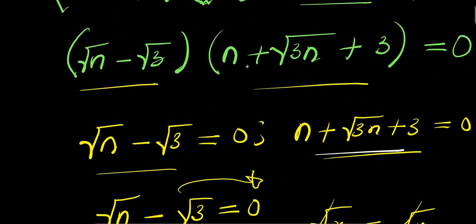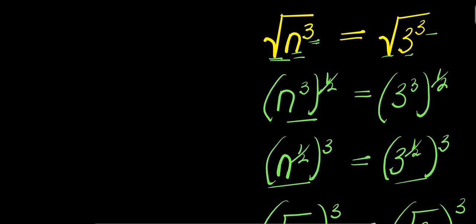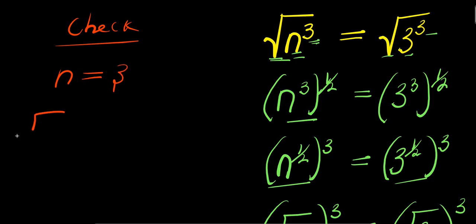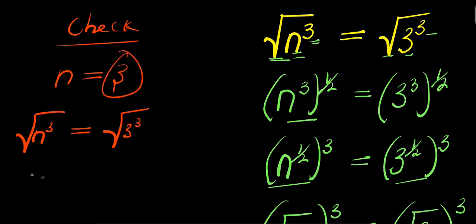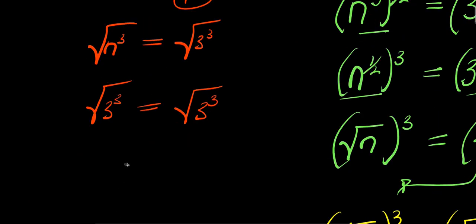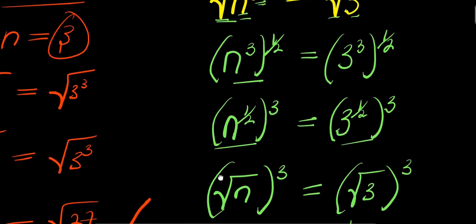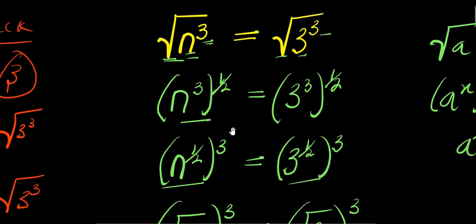So guys, that is it. Now you can check: if you substitute the real value n equals 3 into the original equation, you have square root of 3 to the power 3 equals square root of 3 to the power 3. Since 3 cubed is 27, you have square root of 27 equals square root of 27 — left hand side equals right hand side. That is it, this is how you solve this really cool problem, step by step.